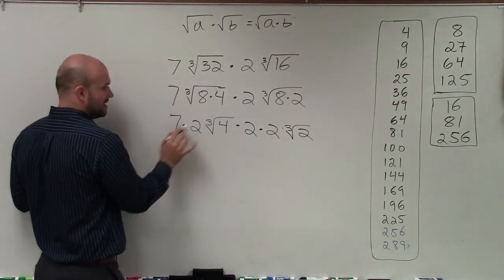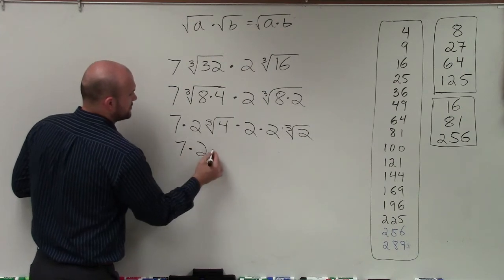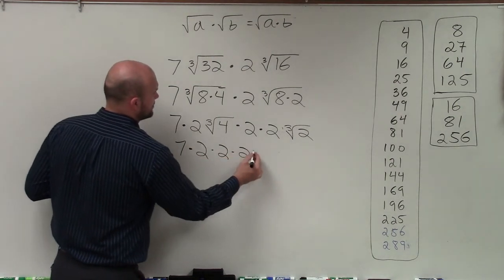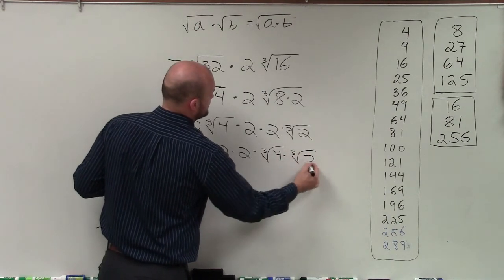Now, I can multiply here, and I can actually rewrite this as 7 times 2 times 2 times 2 times the cube root of 4 times the cube root of 2.